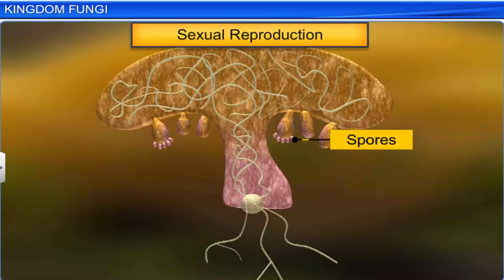The first stage, plasmogamy, involves the fusion of protoplasms between two motile or non-motile gametes. Plasmogamy occurs when two haploid hyphae of compatible mating types fuse. After plasmogamy, the two nuclei fuse together in the stage known as karyogamy.